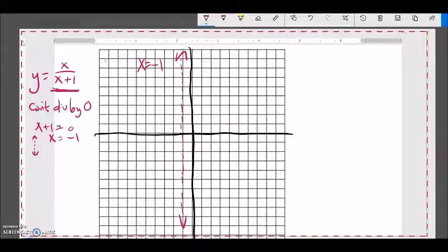x equals negative 1. So, that's a gap in my graph. I can't plug in negative 1 for x because it would make me divide by 0. So, therefore, I can't have a y value along there.